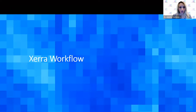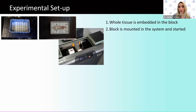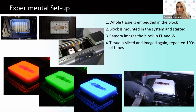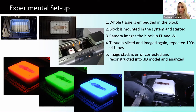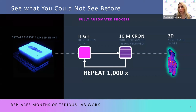The experimental workflow: a whole tissue is embedded with OCT, then frozen, and the block is mounted into the system. We offer five different fields of view with different resolutions depending on which you choose. A camera images the block in fluorescence and white light, and this is repeated hundreds of times. At the end of a run, you get an image stack reconstructed into a 3D model — a high-resolution scan with 10 micron width of tissue removed each slice, yielding a 3D reconstructed image relatively quickly.